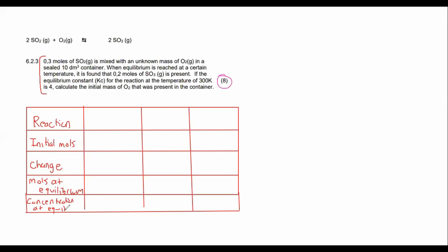And then this one will say concentration at equilibrium. Then what you do is you go put the reaction at the top, so that'll be 2SO2 + O2 takes us to 2SO3.